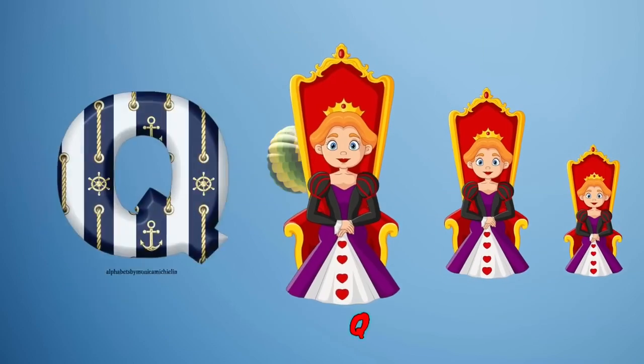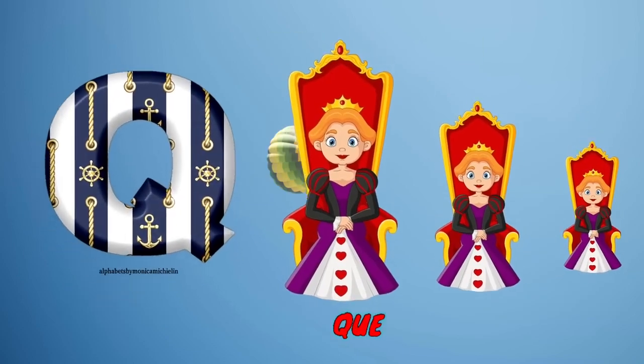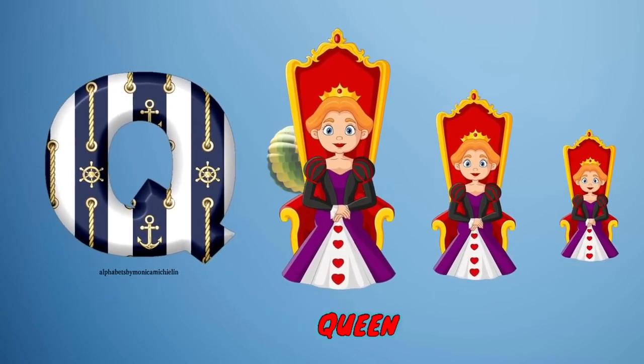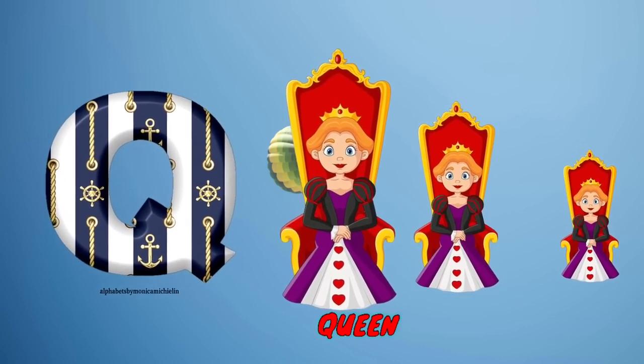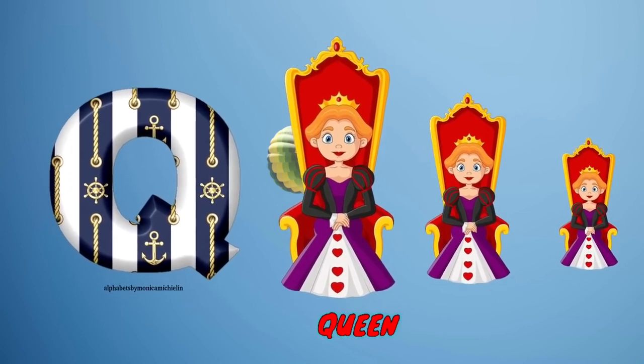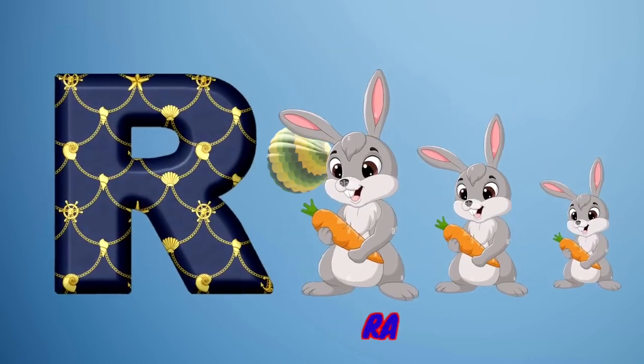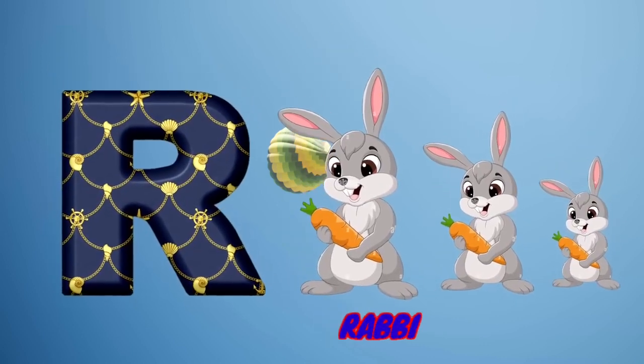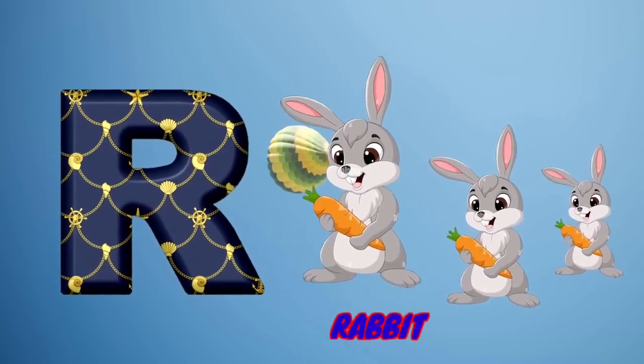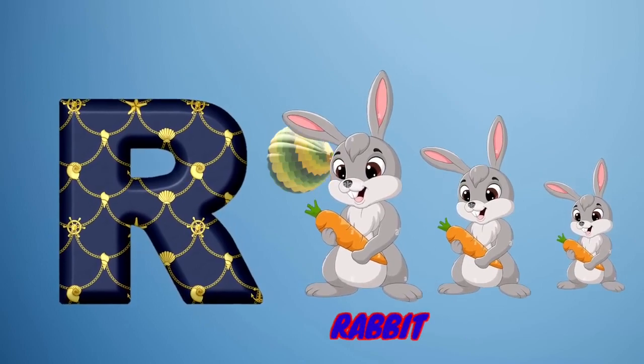Q is for queen, k-k-queen. R is for rabbit, r-r-rabbit.